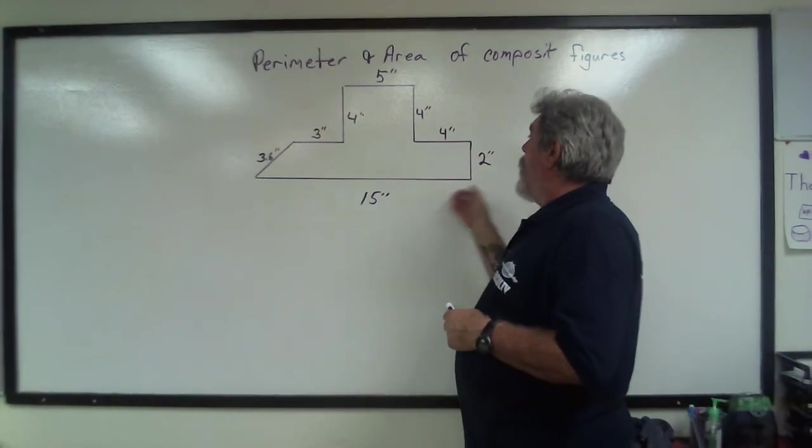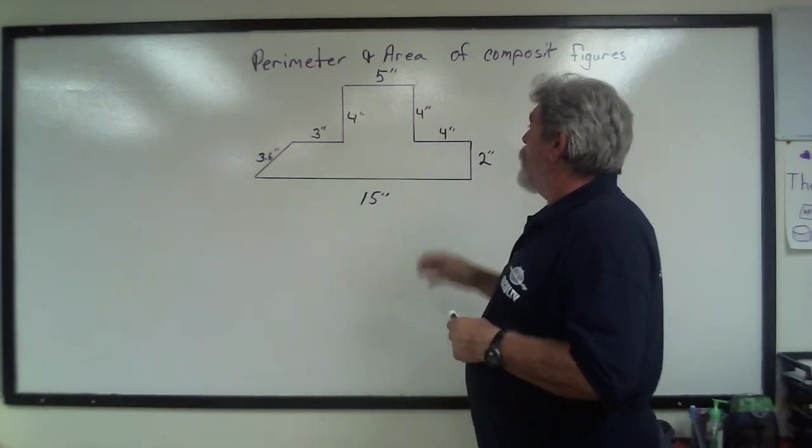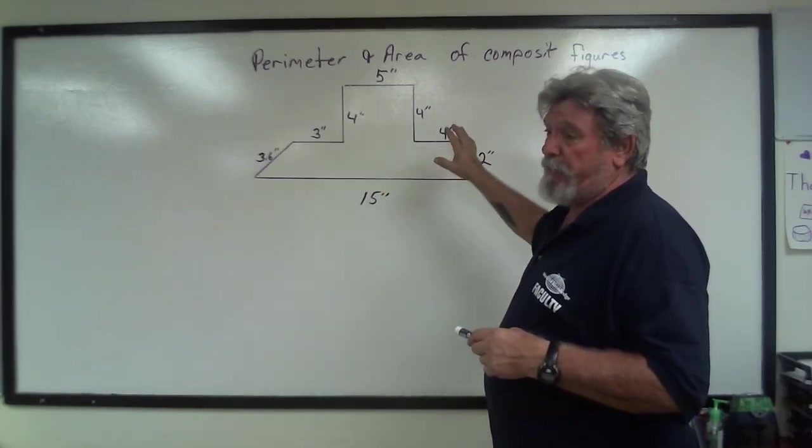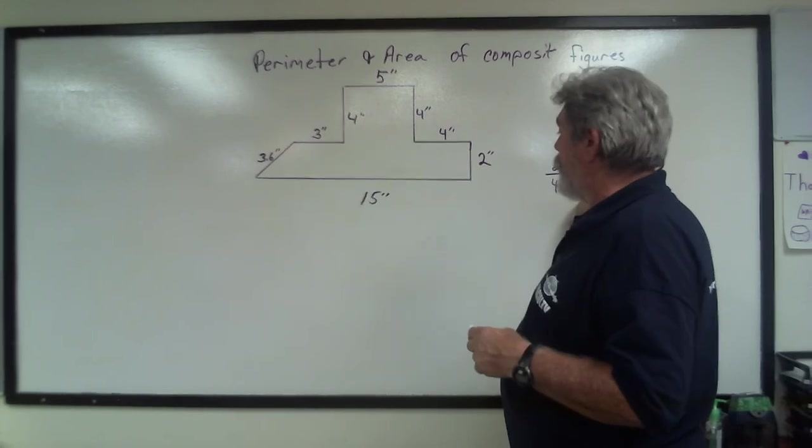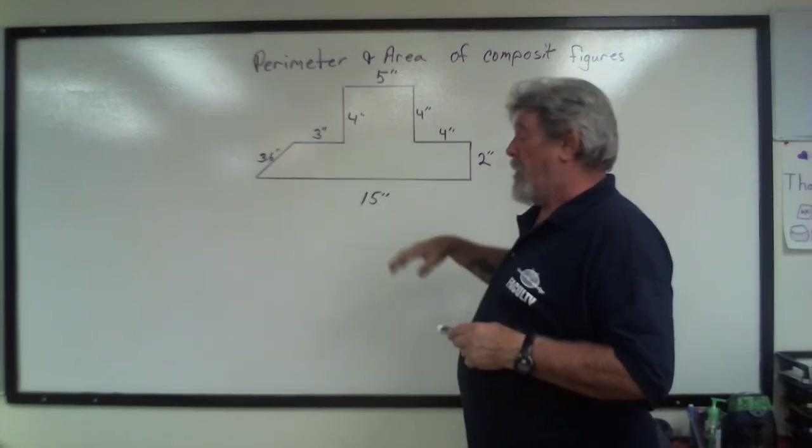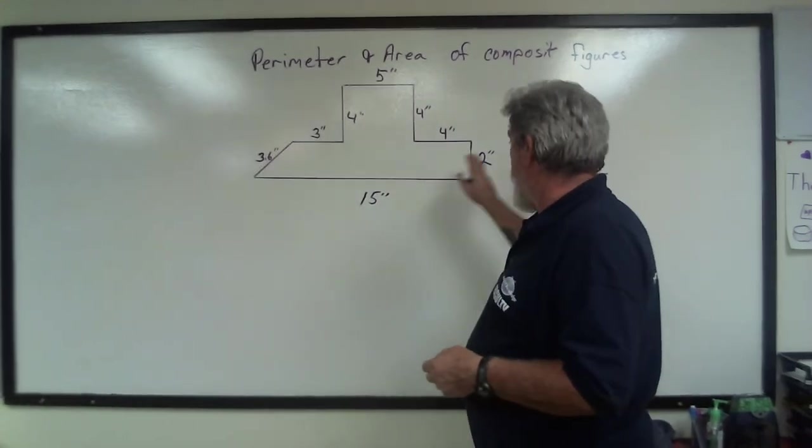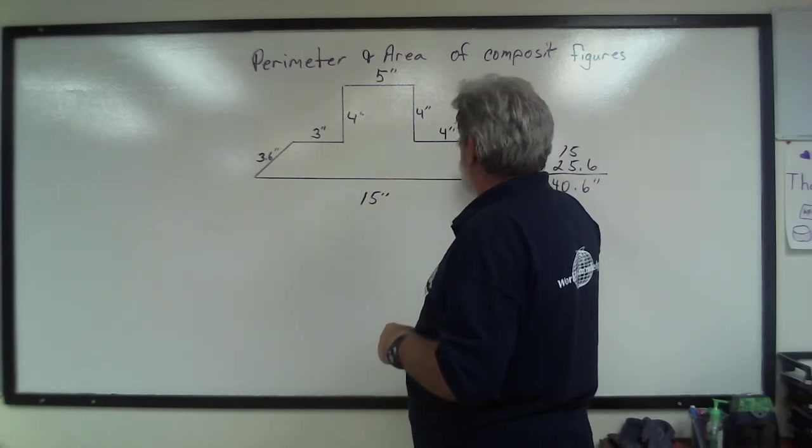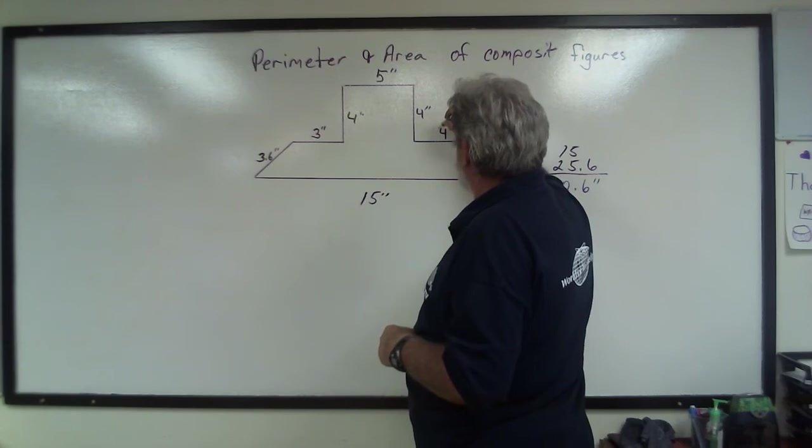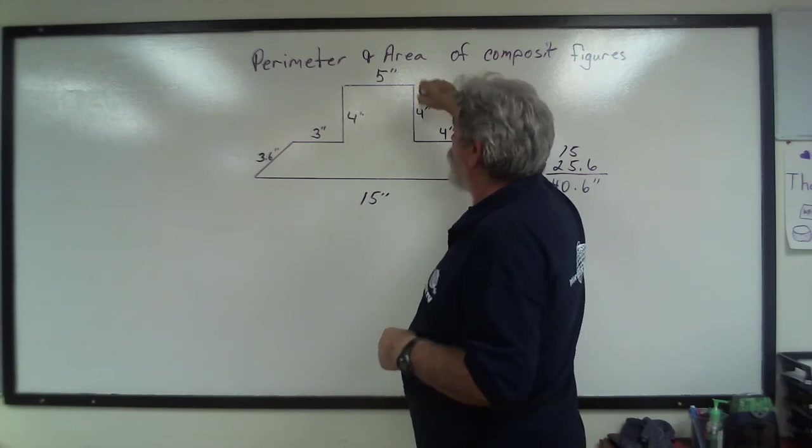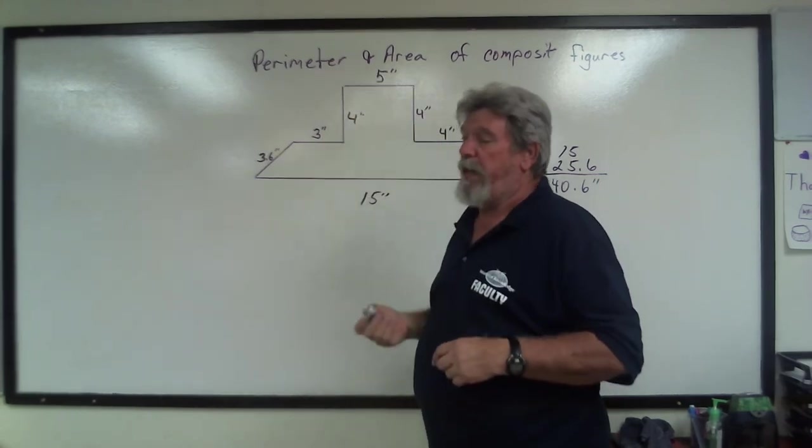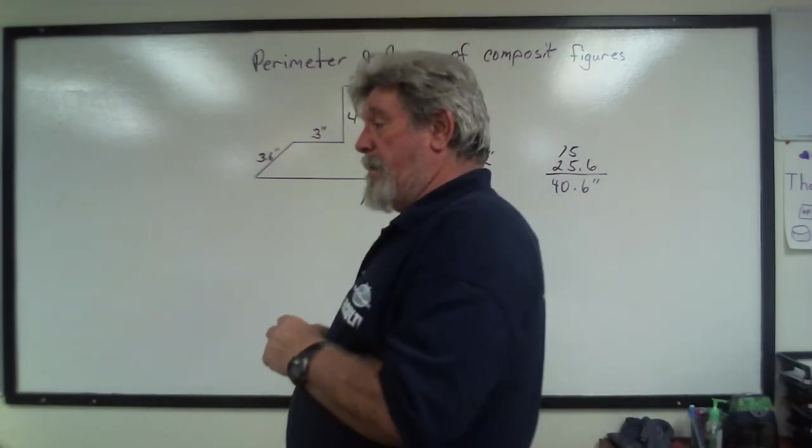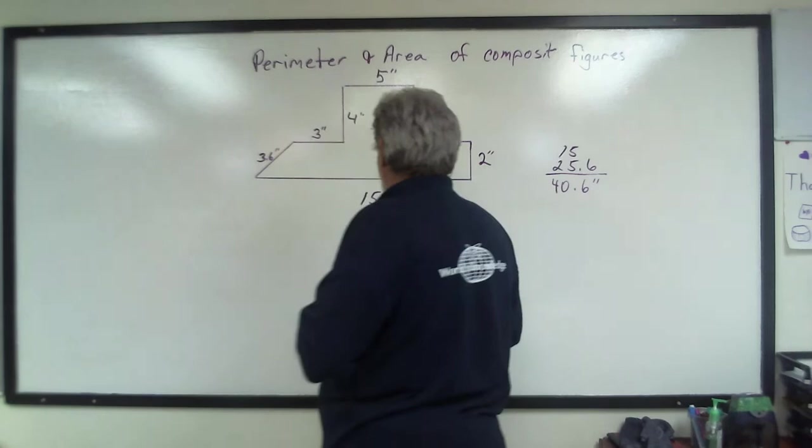It doesn't matter how you add them all up as long as you know that you've got all the same numbers here that add up to 40.6 inches. So if you have to, you cross them off as you add them together. So you can add the 15, cross it off. Add the 2 to the 15 is 17, add the 4 to that, add 4 to that. Cross them off as you go along so you know that you're getting all your numbers. Don't miss numbers, it's easy to do.